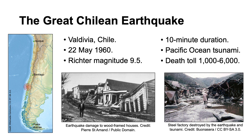Tsunami waves up to 82 feet high, triggered by the earthquake, battered the coast of Chile and sped across the Pacific Ocean at hundreds of miles an hour, reaching Hawaii, Japan, the Philippines, China and Australasia. The death toll isn't known for certain. Estimates range between 1,000 and 6,000 people, but it was a devastating event.